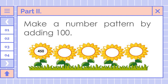This one, we're going to make a number pattern by adding 100. We're going to start at 450. So 450 plus 100 is equal to 550. Next, 550 plus 100 is 650. Then 650 plus 100 is 750. And the last number, 750 plus 100 is 850. Did you get it correct? Good job!